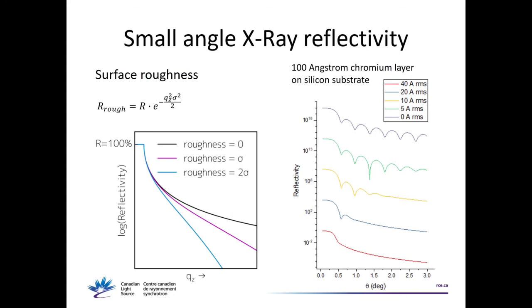You can also get roughness from reflectivity. Roughness is going to kill your reflectivity signal — the higher the roughness, the faster the reflectivity signal falls. This is an example for a 100 ångström chromium layer where increasing the roughness destroys your measurement.